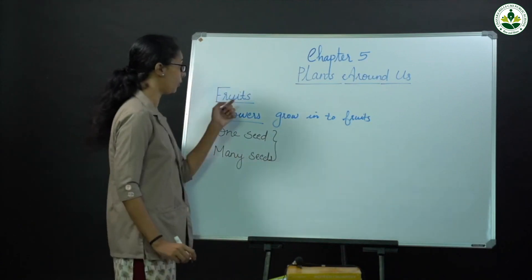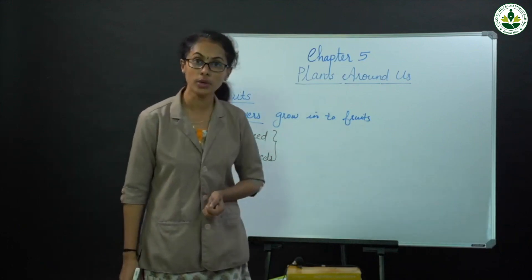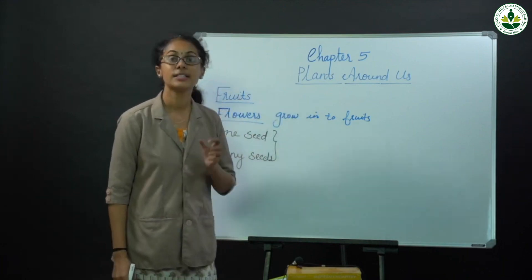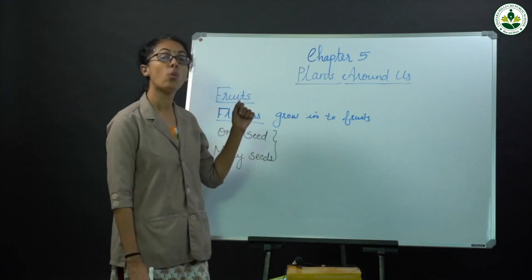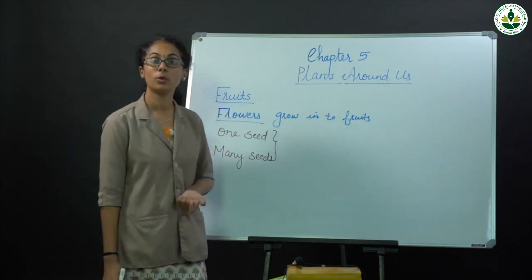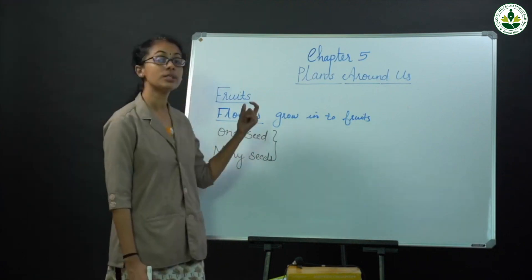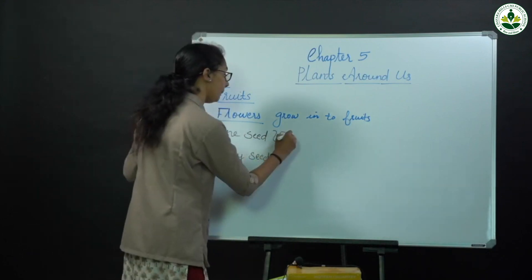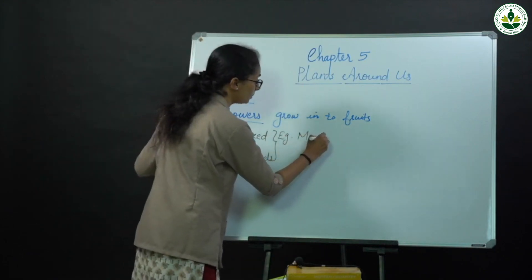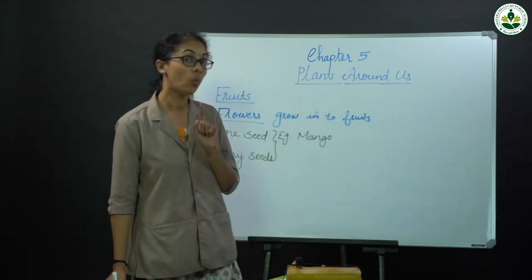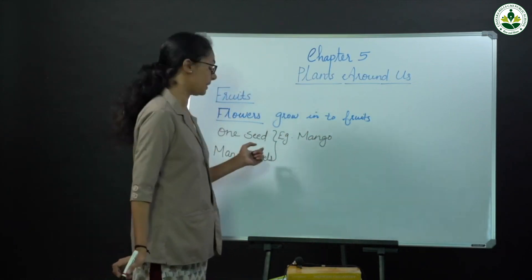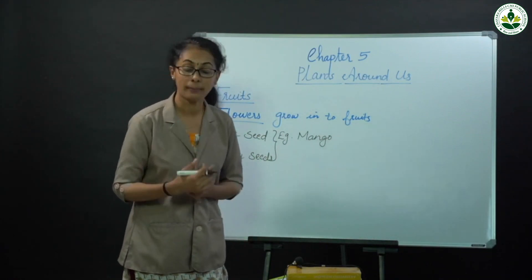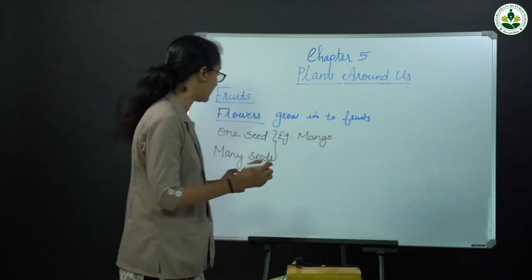Flowers grow into fruits. Most fruits have seeds inside them. Some fruits have only one seed — for example, mango has only one seed. Some fruits have many seeds — for example, papaya and watermelon.